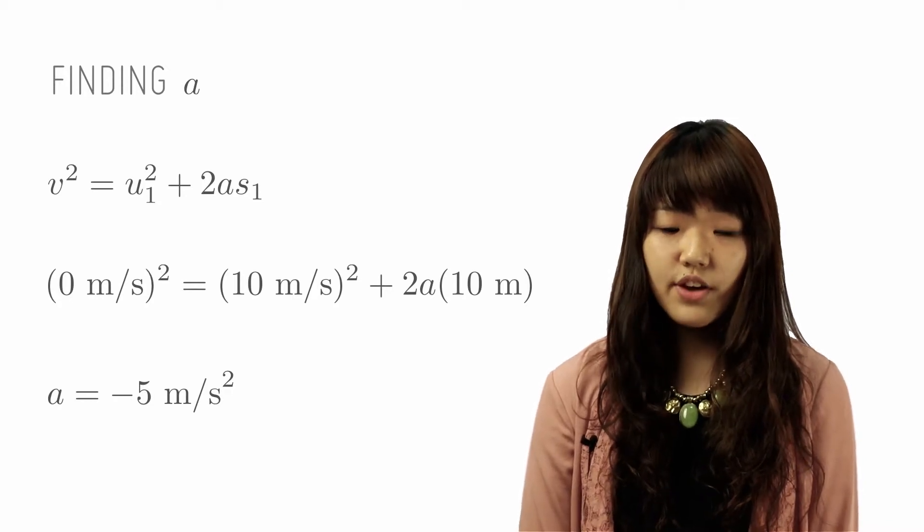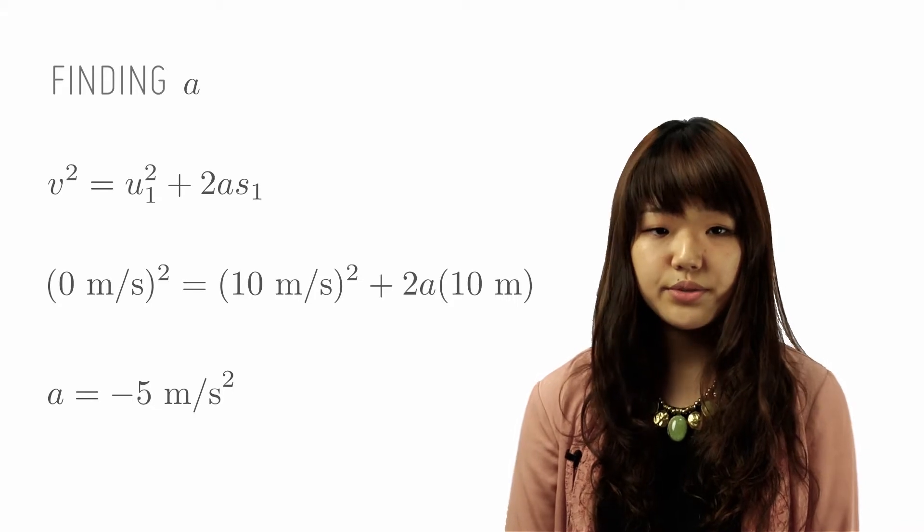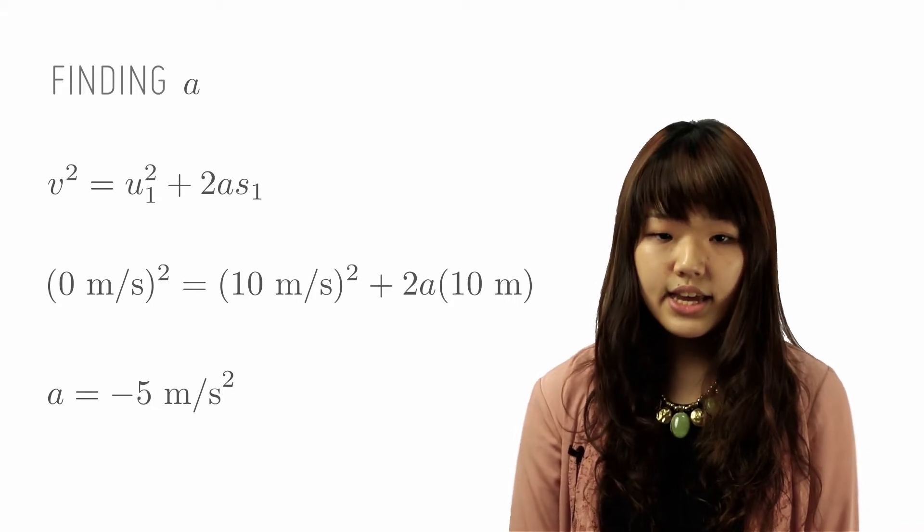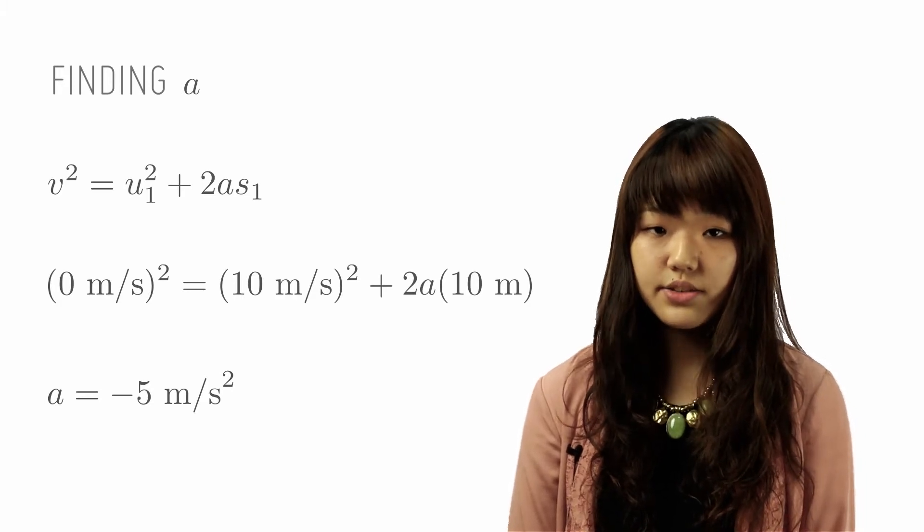We have V, we have U, we have S, now we are trying to find a. We shall apply the equation V² equals U² plus 2aS. We substitute the values in and we find that a is actually equal to negative 5 m/s².